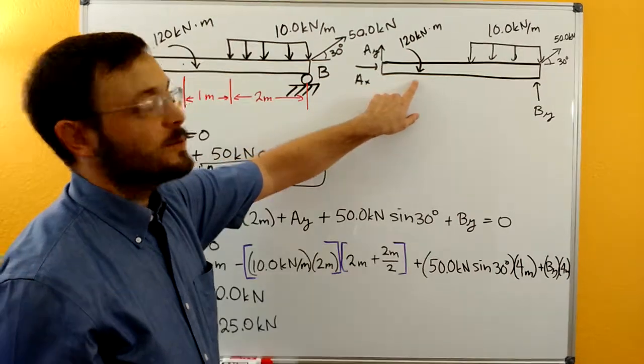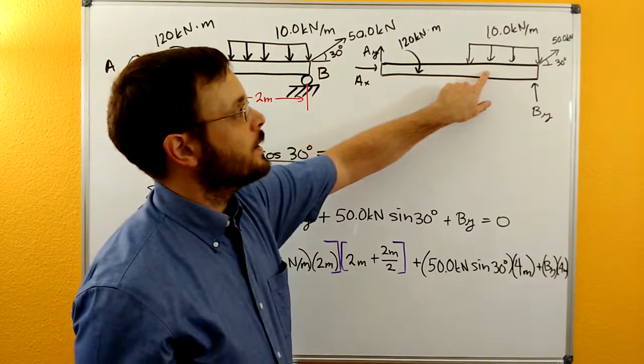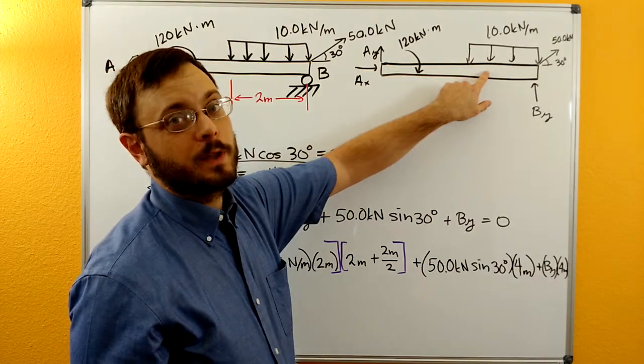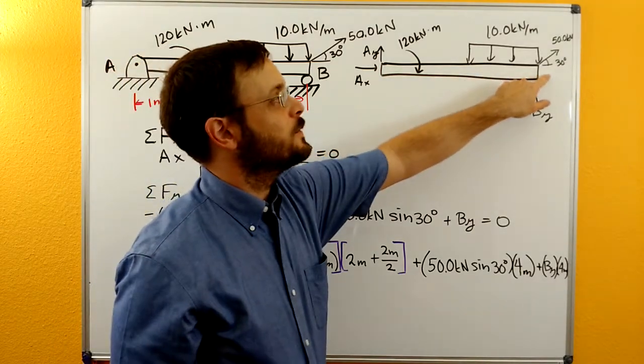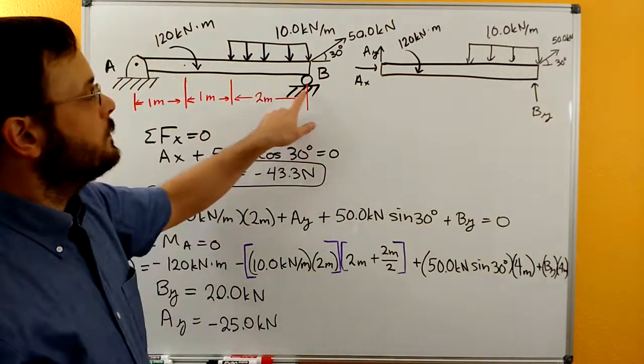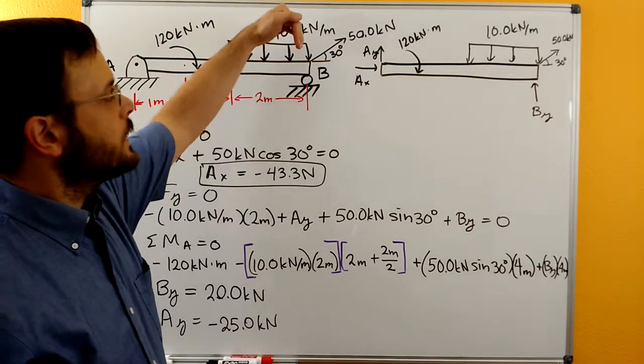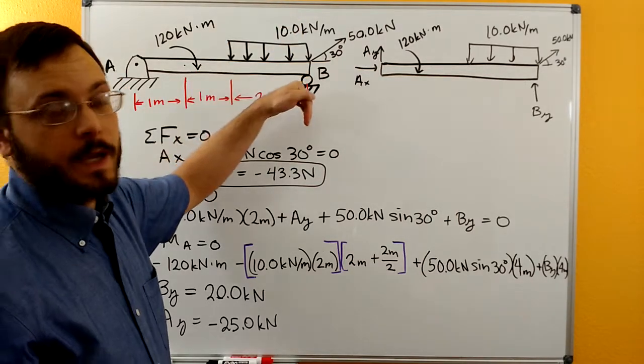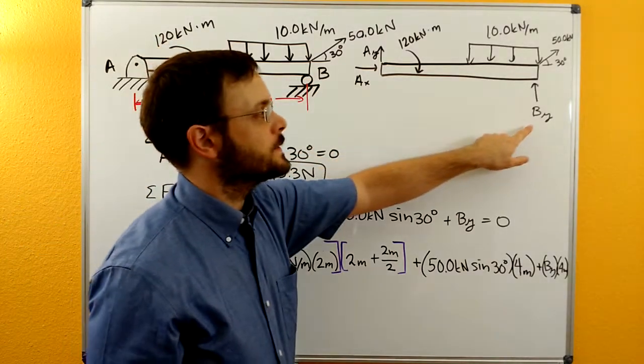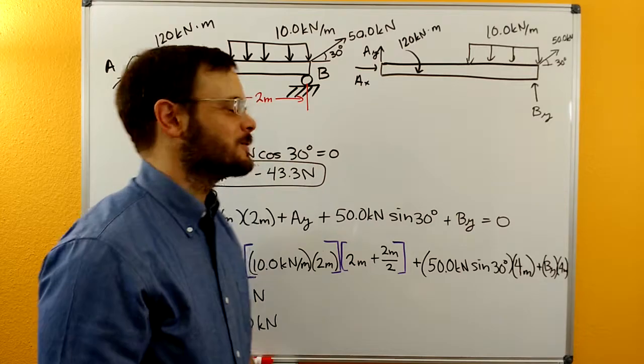We have the 120 kilonewton meter couple moment. We have the 10 kilonewton per meter applied distributed load. We have the 50 kilonewton concentrated applied force. And then at B, we have this roller. This roller is only going to prevent us from pushing the beam down into the floor. So we have a single BY that acts only in the positive y direction.